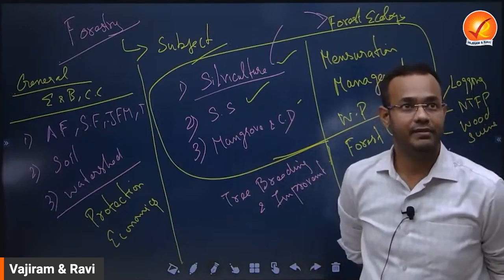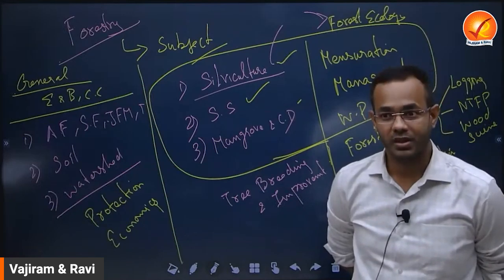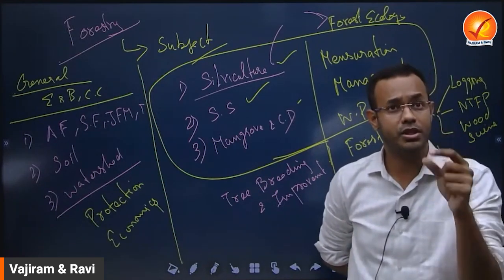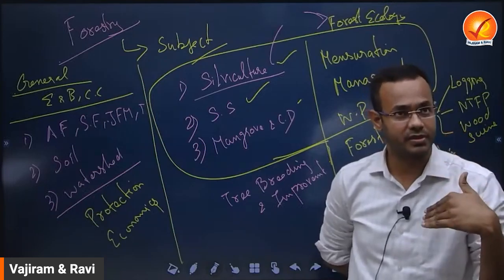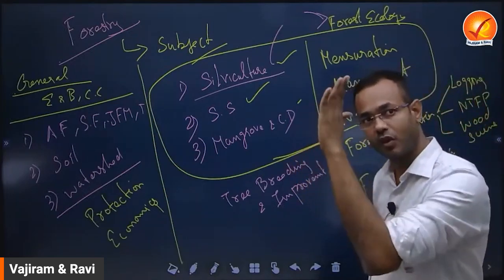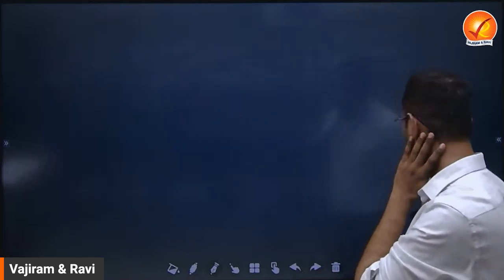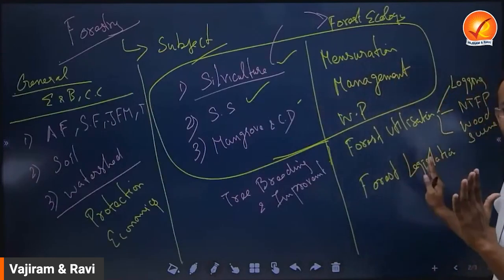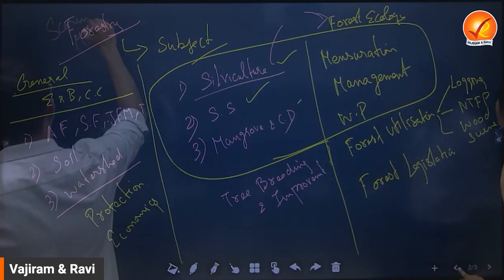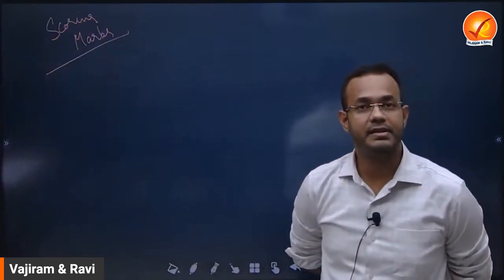In Paper 2, forest protection and forest economics are additional units. Forest protection is one of the easiest topics to study in forestry. Forest economics allows you to apply basic economics knowledge and write accordingly. I separate these as allied areas. We will discuss further in classes which questions to pick — question selection is more important for scoring marks. Each unit will be discussed with a framework.